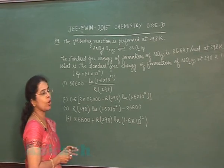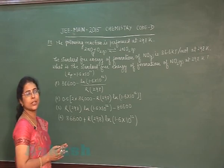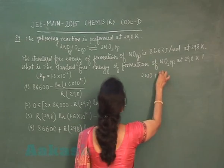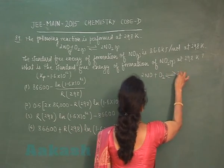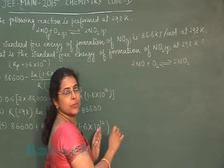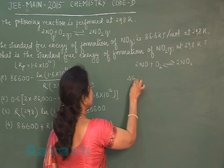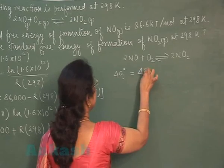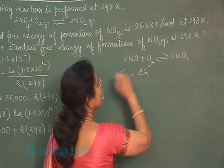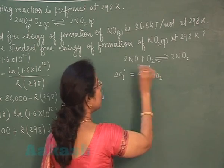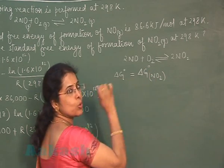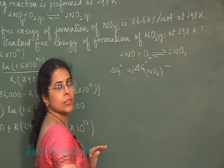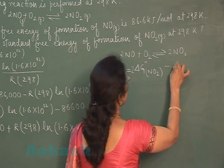What is the standard free energy of formation of NO2 at 298 Kelvin? The reaction given here is 2 NO plus O2 gives 2 NO2. For this chemical reaction, delta G0 of the reaction equals delta G0 formation of product. Product is NO2. 2 mol NO2 is forming, so multiply coefficient by 2.